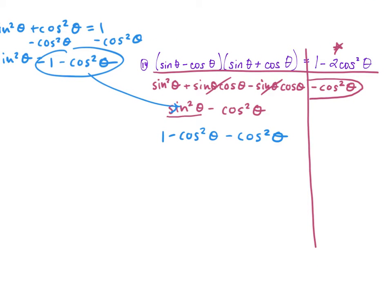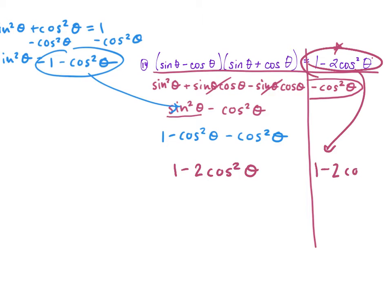What can we do next? We subtract the two cosine² terms. Negative cosine² minus cosine² is negative 2 cosine². So we get 1 minus 2 cosine² θ.